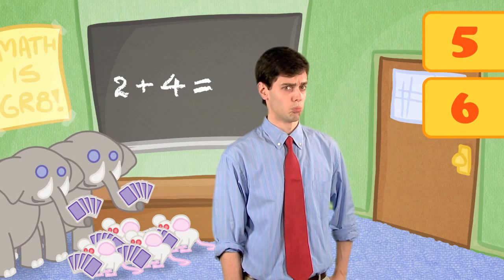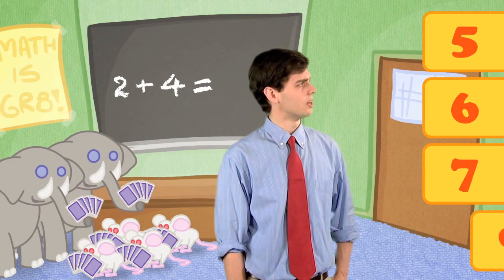Are there five animals at the table? Six animals at the table? Seven animals at the table? Or nine animals at the table?